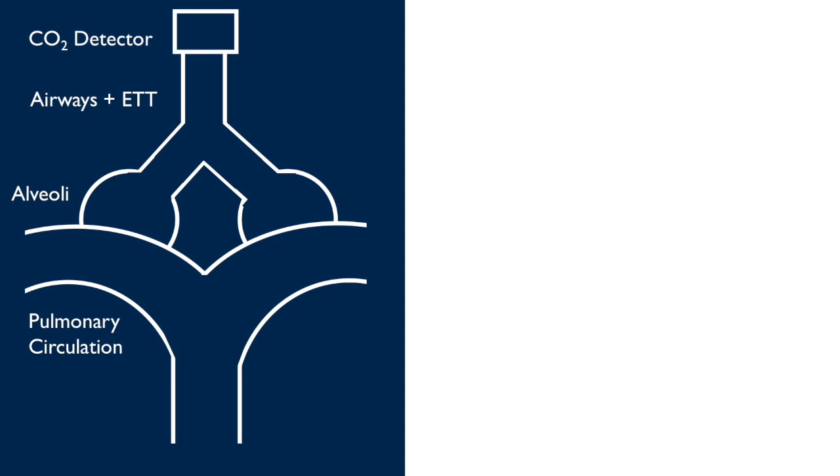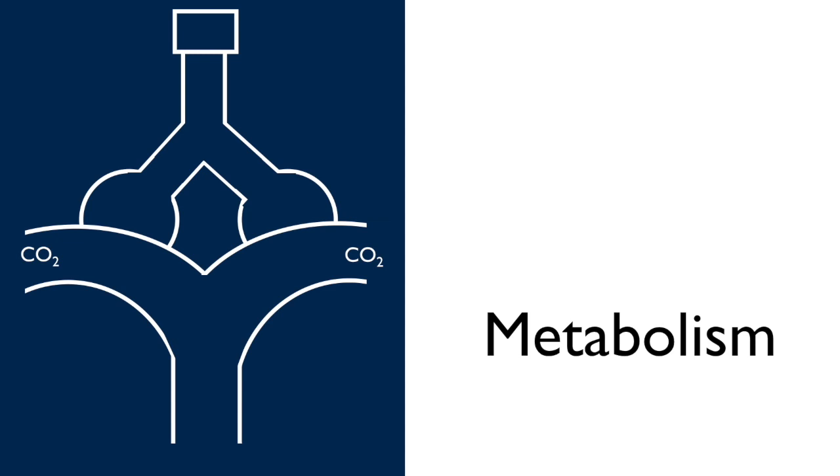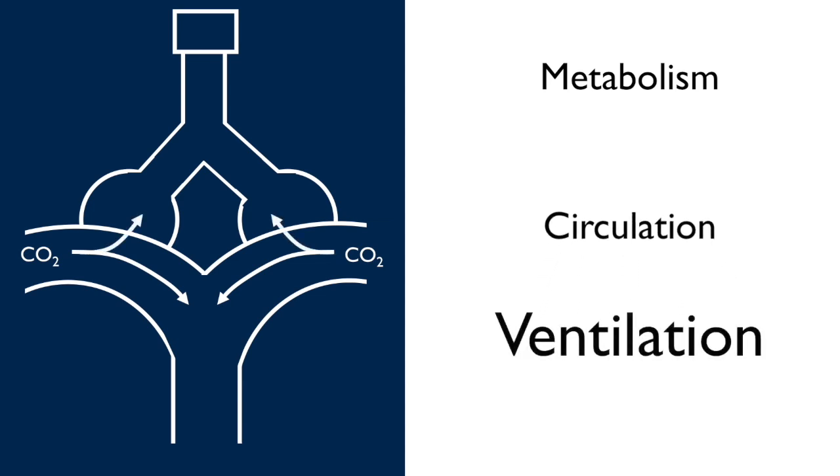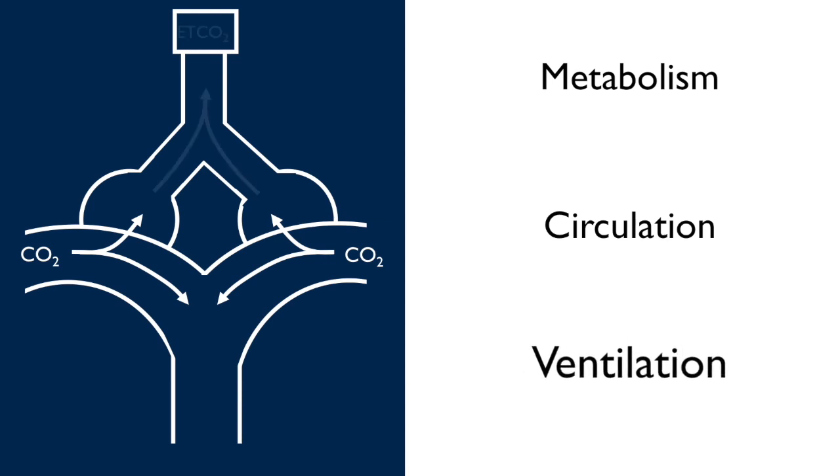In order to get CO2 to register, three things need to happen physiologically. First, we need to produce carbon dioxide in the peripheral tissues through aerobic metabolism. Second, we need pulmonary perfusion. We need all of that CO2 to actually circulate to the lungs. And finally, ventilation. Not only do we need carbon dioxide to diffuse into the alveoli, but also to make it up to our detector.